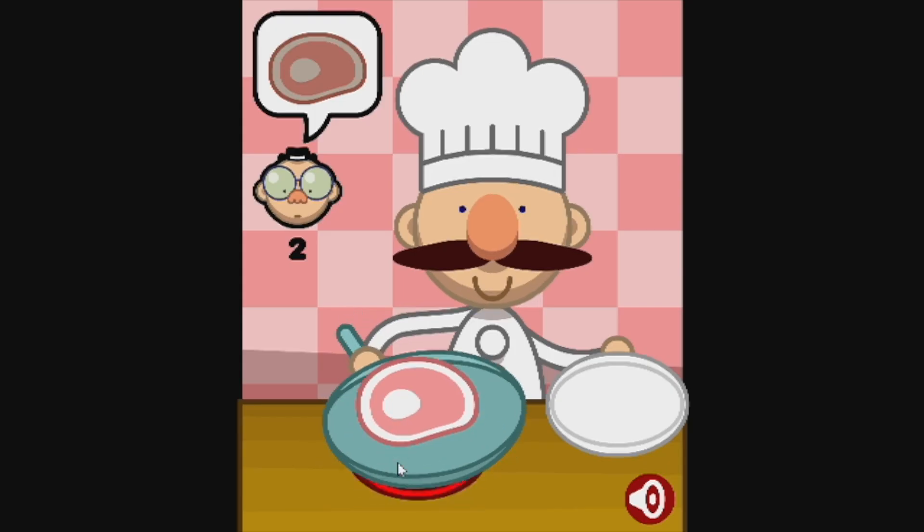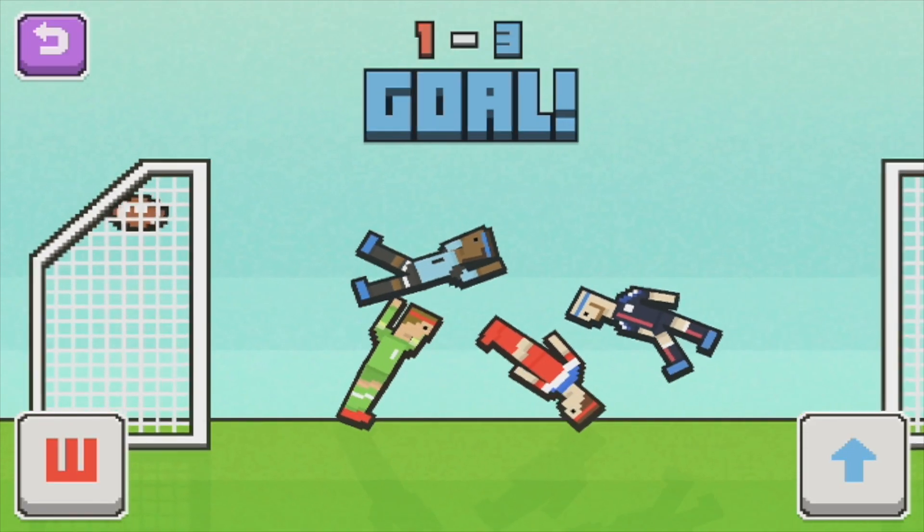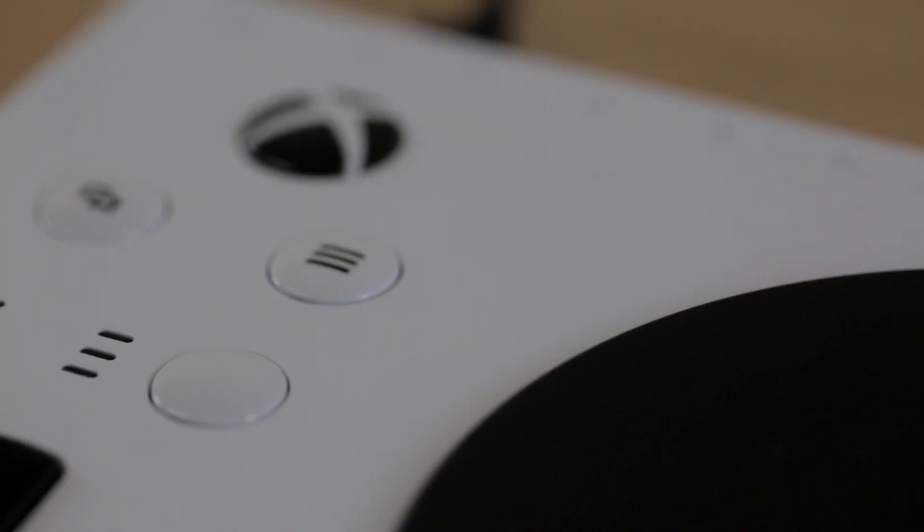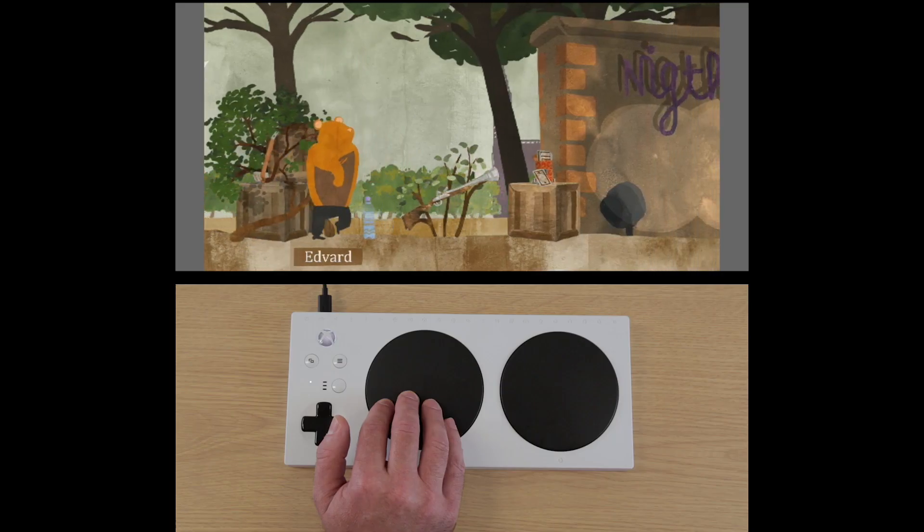This video shows a range of mostly free PC games that can be played with one or two buttons or switches. We will be using an Xbox adaptive controller and jointer key to play these games.